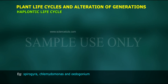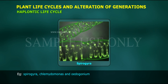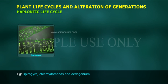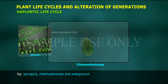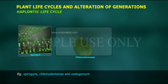Examples of haplontic life cycle: Spirogyra, Chlamydomonas, and Oedogonium.